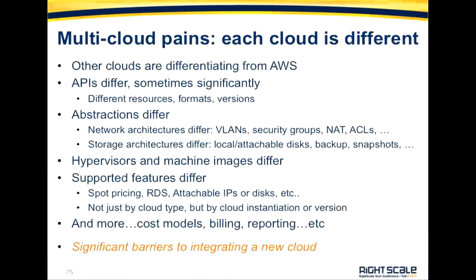So how do we get there? There are certain things we have to overcome. There's a lot of pain, and a lot of this pain comes from the fact that clouds are really, really different — and not by happenstance. They're different partly because they want to differentiate the services and products they market to you. The challenge is to surpass all these differences in a single unified way. And I'm not just talking about APIs, which differ substantially — not just in which resources they provide, but in formats and versioning that change a lot over time. Most importantly, the abstractions they provide are quite different.